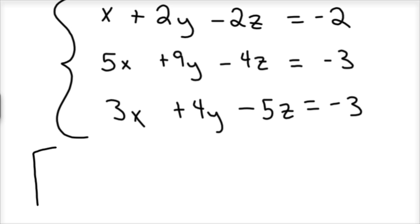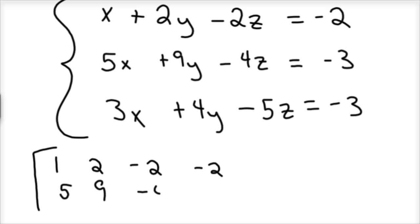My matrix would look something like this: 1, 2, negative 2, negative 2, where you're just using the coefficients in front of the variable. Then 5, 9, negative 4, and negative 3. And then 3, 4, negative 5, and negative 3.